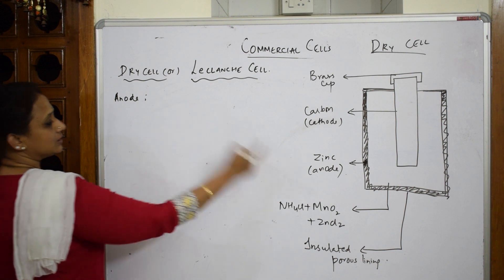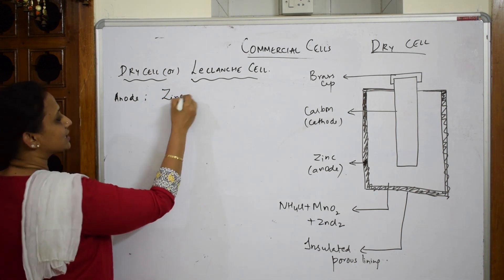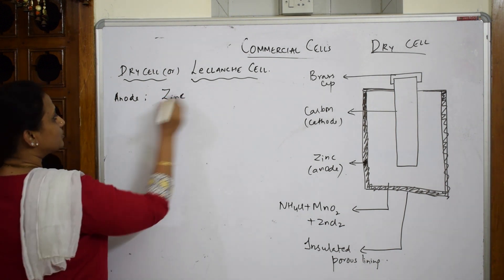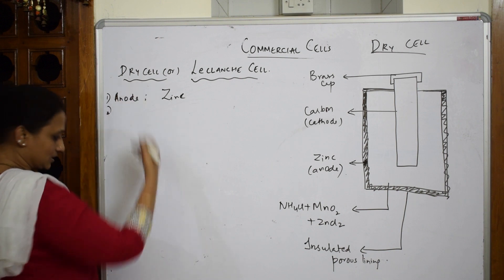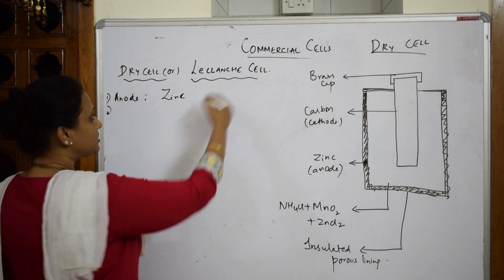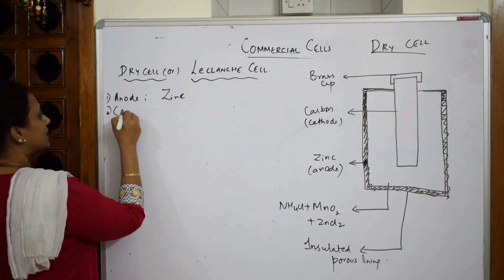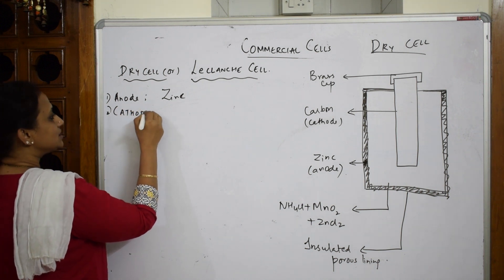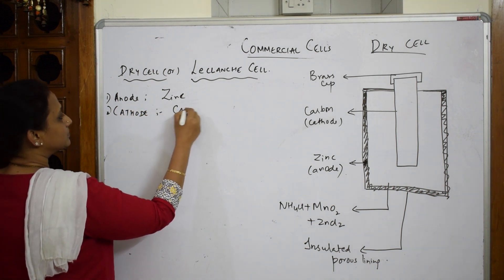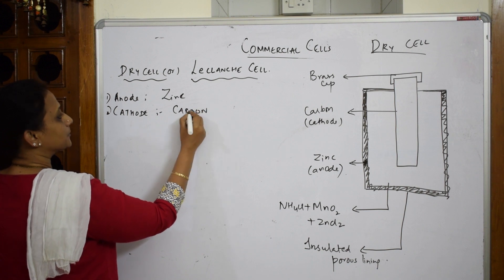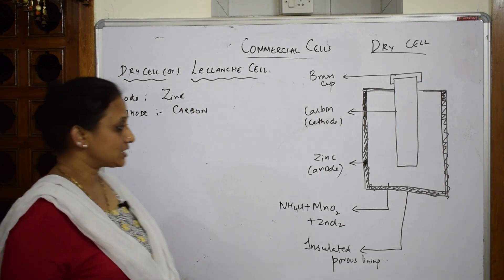Please try to write it in this way only, so that everything is formatted and every step carries marks. When I come to cathode, the cathode which I am going to use is carbon or graphite. This is the cathode.